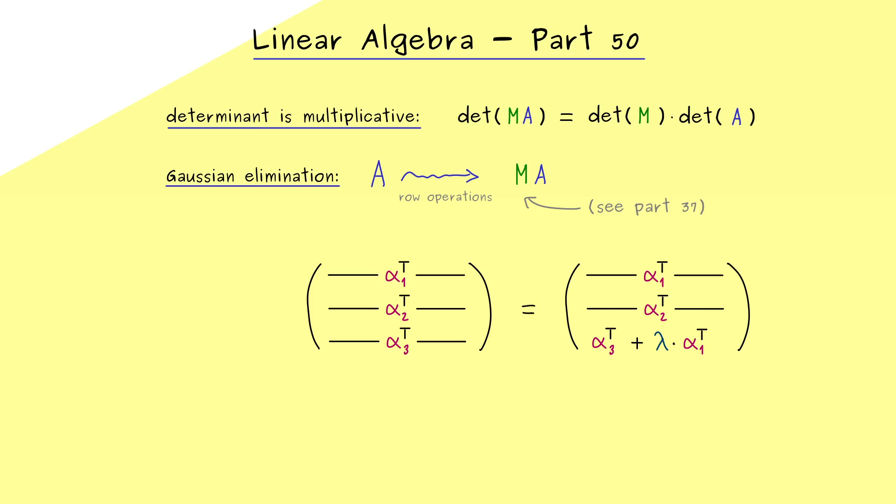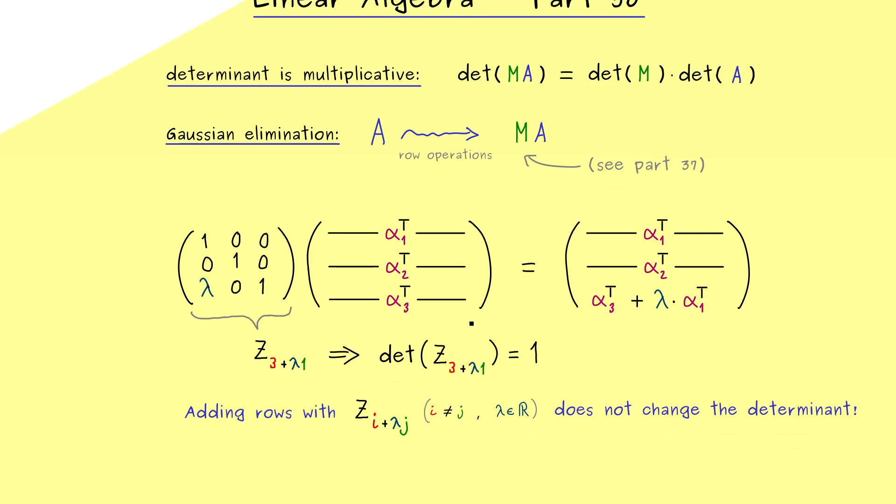Hence we don't change the first and the second row but the third row will look like this then. And now we have learned that we can rewrite this as a matrix product. So we just have to multiply the correct matrix from the left here. And now please recall it's a 3 times 3 matrix which looks like this. And if you look back at part 37 you might see there we have called it Z. Now this is all not so important. The important part is that all these matrices here always have a triangular structure. And moreover they have only ones at the diagonal. In other words we can use the last video and conclude that the determinant of Z is simply 1. And therefore we can conclude using our multiplication rule here that adding rows in this sense does not change the determinant of A at all. This is a very nice result because it allows us to simplify the matrix A inside the determinant.